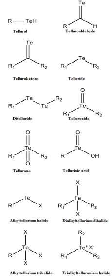Organotellurium compounds can be formed via reaction with organolithium compounds (Te + RLi → R-Te-Li). A departure from sulfur and selenium chemistry is the availability of the tetrachloride TeCl4. Tellurium tetrachloride reacts with alkenes to give the chlorotellurium trichloride addition product (R-CH=CH2 + TeCl4 → R-CH(TeCl3)CH2Cl). These organotellurium derivatives are susceptible to further reactions.